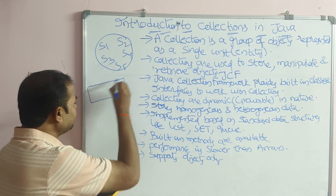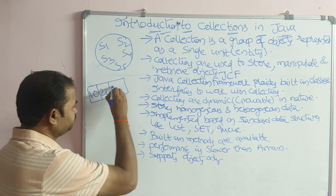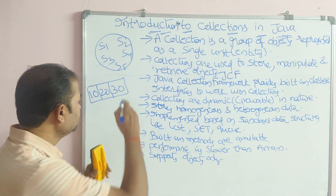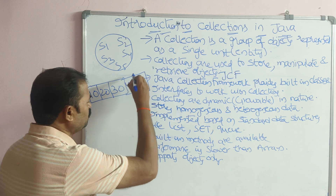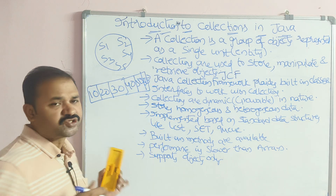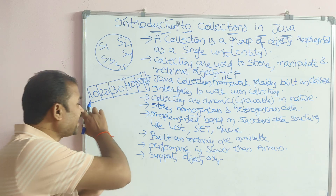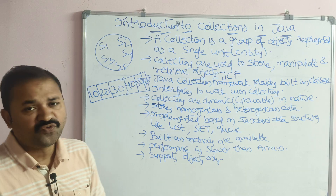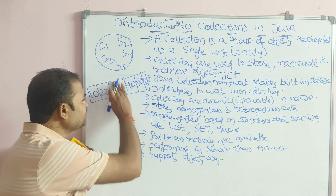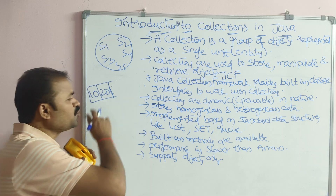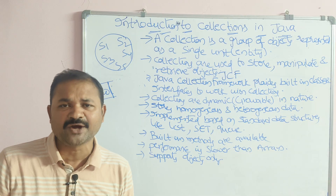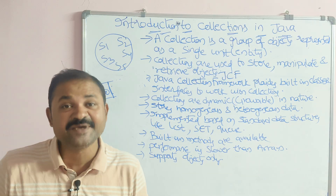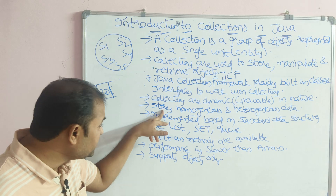For example, if a collection contains three objects and we want to insert three more, we can do so — say 40, 50, 60 — and the collection grows. If we perform four removal operations, the collection will shrink. So according to our requirement, the collection may grow or shrink, meaning it is dynamic in nature.